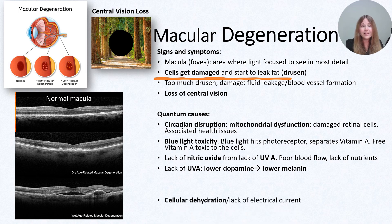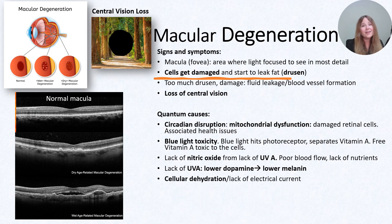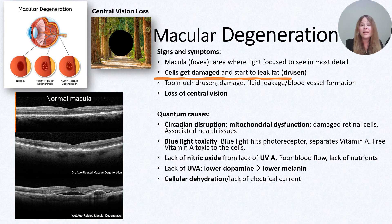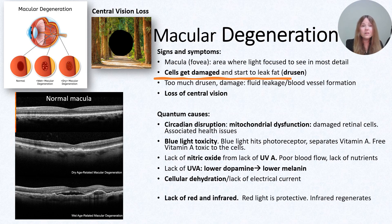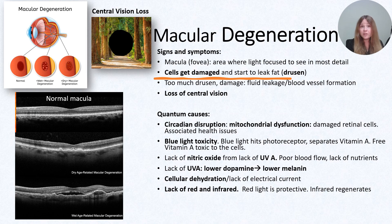A lack of red light will also contribute to poor mitochondrial function and less exclusion zone water. Cellular dehydration is a lack of electrical current or voltage, and we need a really high voltage in the retina because we need exclusion zone water — there is an intense amount of energy needed to absorb and process light all day long. Blue light will also contribute to cellular dehydration, as does Wi-Fi, and a lack of infrared light also contributes to dehydration.